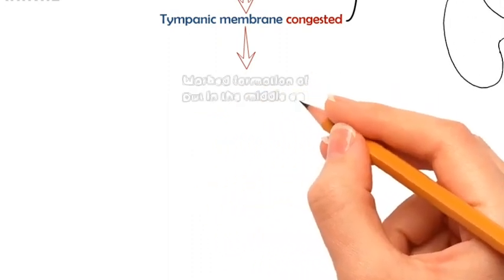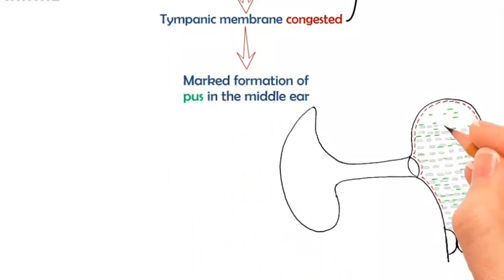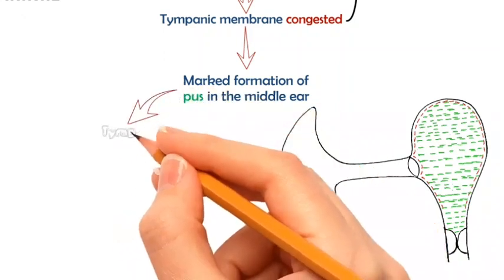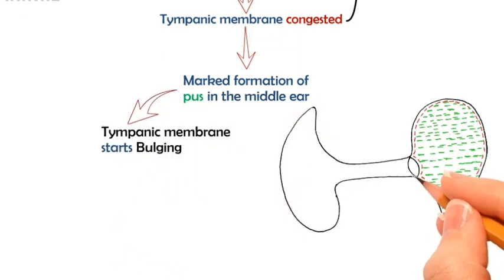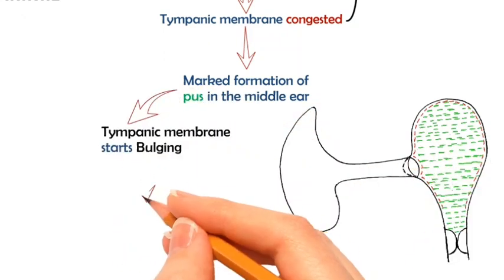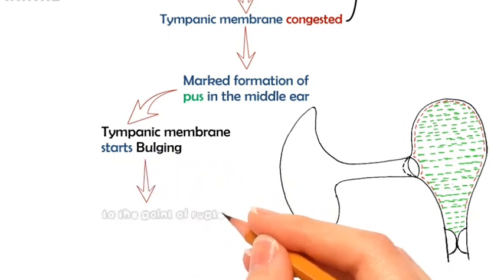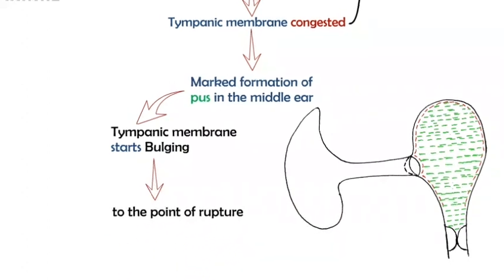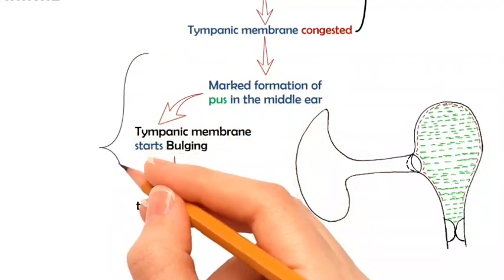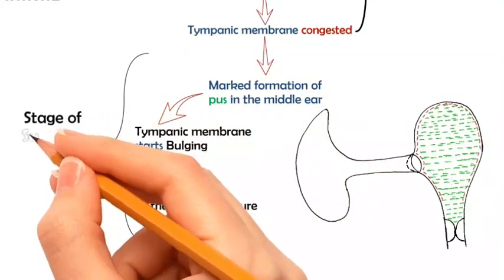Marked pus formation in the middle ear will be observed, and the tympanic membrane starts bulging to the point of rupture. This is the stage of suppuration.